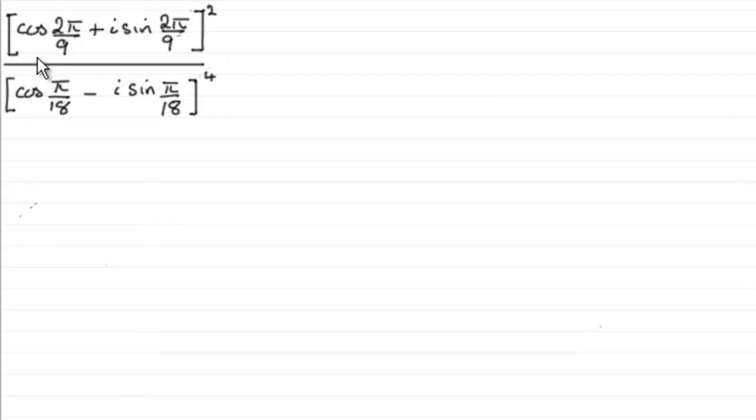What I want you to do is simplify the cosine of 2π over 9 plus i sine 2π over 9 all squared, divided by the cosine of π over 18 minus i sine π over 18 all to the power 4.